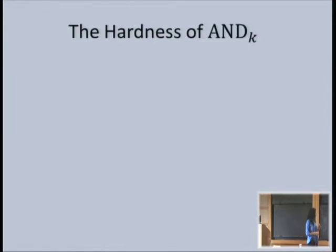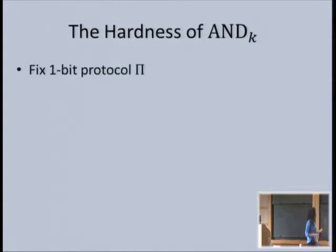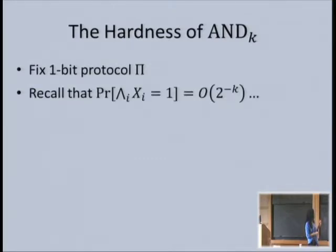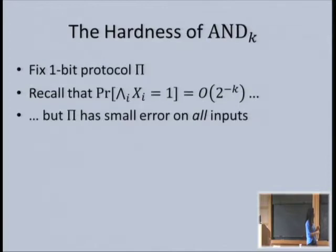Now there's nothing for it—we have to roll up our sleeves and show that one-bit AND with k players requires Ω(k) bits of information. Let's fix the one-bit protocol π that we're going to analyze. It's extremely unlikely we're going to get a one answer—but this protocol has to be good for all inputs, even the very unlikely ones like 1^k.